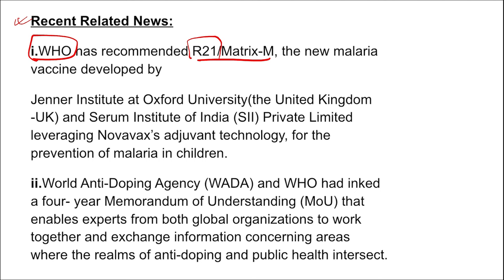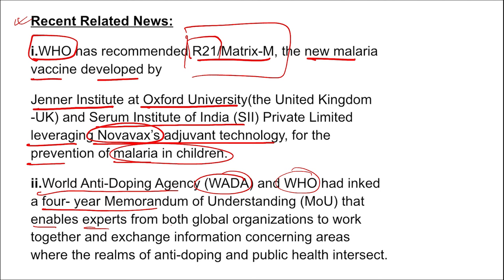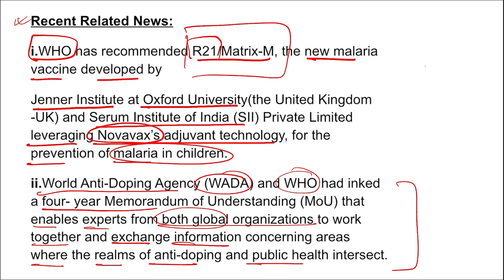In related WHO news: WHO recommended R21/Matrix-M, the new malaria vaccine developed by the Jenner Institute at Oxford University in the UK and the Serum Institute of India Private Limited, leveraging Novavax adjuvant technology, for the prevention of malaria in children. Also, the World Anti-Doping Agency (WADA) and WHO inked a four-year MOU to enable experts from both organizations to work together and exchange information on areas where anti-doping and public health interact.